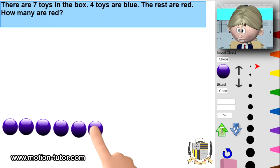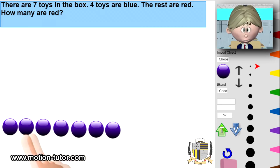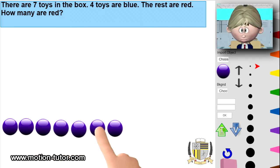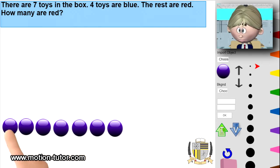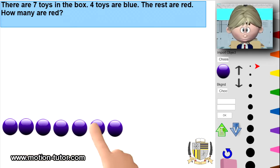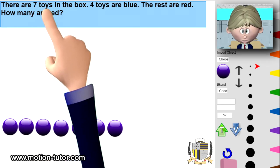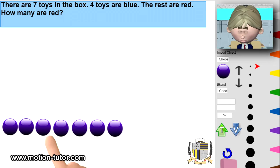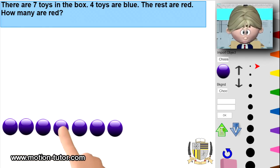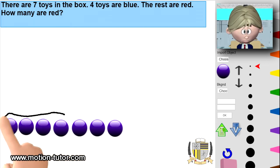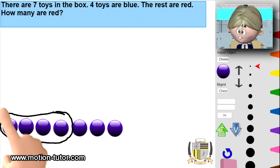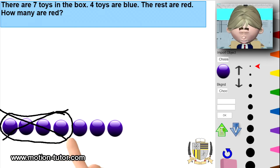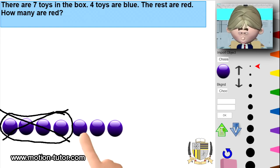Let's take a look at this one. I'm using counters again — please help me count and visualize how to solve this. We have one, two, three, four, five, six, seven — seven counters right here. These represent the seven toys in the box. Four are blue and the rest are red. So: one, two, three, four — these four would be the blue ones. These four represent the blue, and the remaining or the rest are red. Just by looking at this, we can clearly see that three are red.